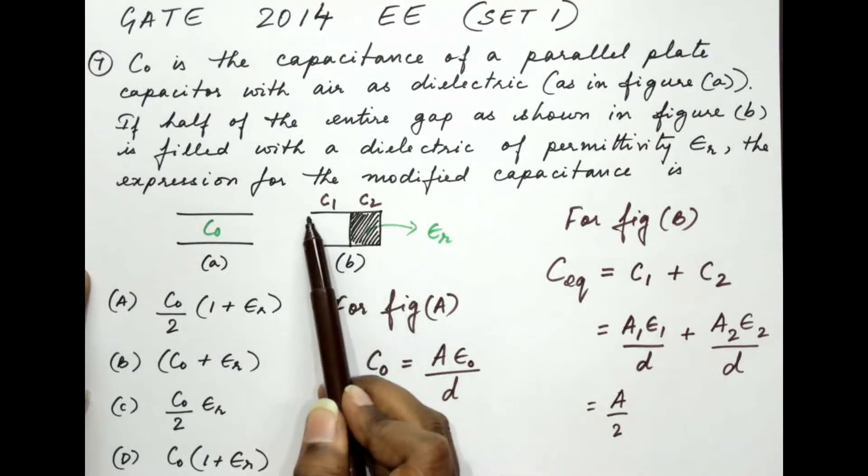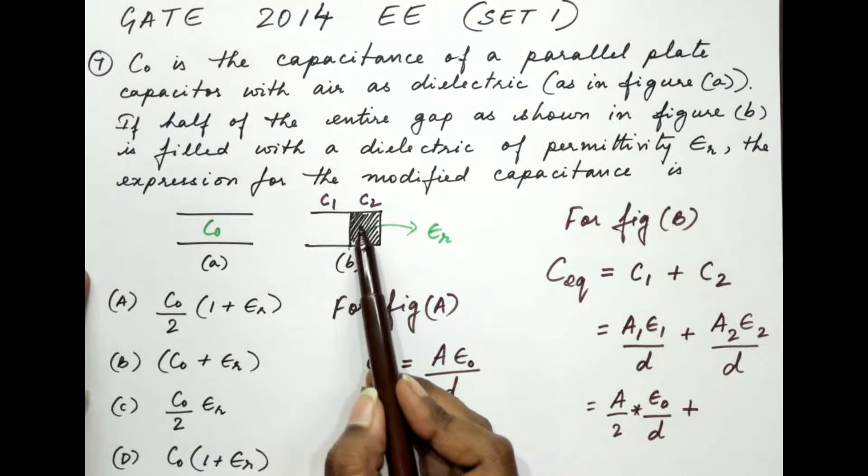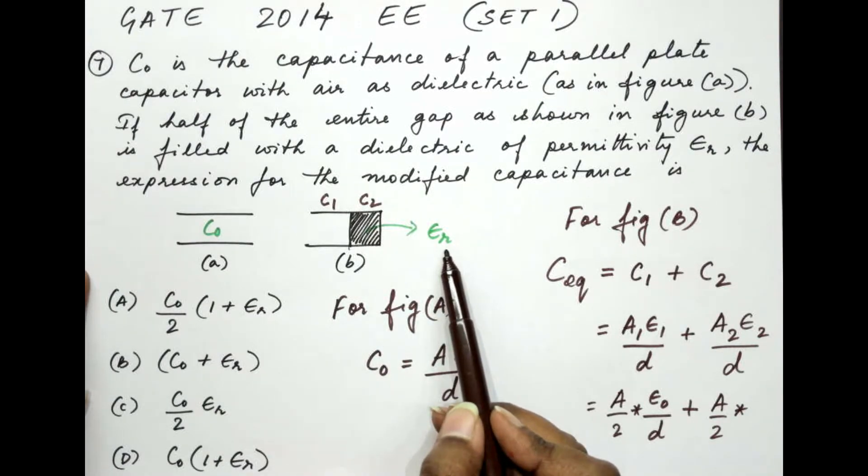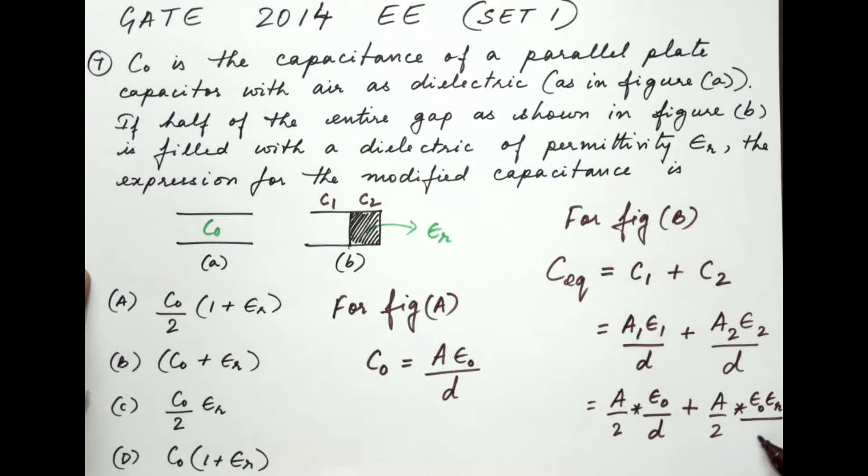So here for C1 it is A by 2. For C2 also it is A by 2. Now the permittivity of the first part is epsilon 0. So let's write that as epsilon 0. The distance is anyway D. Plus, let's take a closer look at part C2 now. For C2 the area is A by 2. The permittivity is epsilon r. So we note this down as epsilon 0 into epsilon r divided by D. So here we have C2 to be A by 2 into epsilon 0 epsilon r by D.